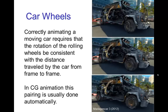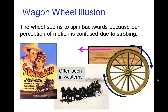A few frames from Madagascar 3 illustrate this: the car is moving fairly slowly, and tracking marks on the front wheel shows it turning only by a small amount, consistent with the speed of the car and the distance it travels from frame to frame. In CG animation, this pairing is usually done automatically, making it somewhat more of a challenge for hand-drawn animation.